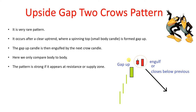This upside gap two crows pattern is a bearish reversal signal. In the next day's candle, when it's gap up opening, you may take an entry there. The important thing is we are comparing body to body — the candle's body lower portion compared to the next candle's lower portion or close. If you find such a pattern near any resistance or supply area, the probability is more and they work better.